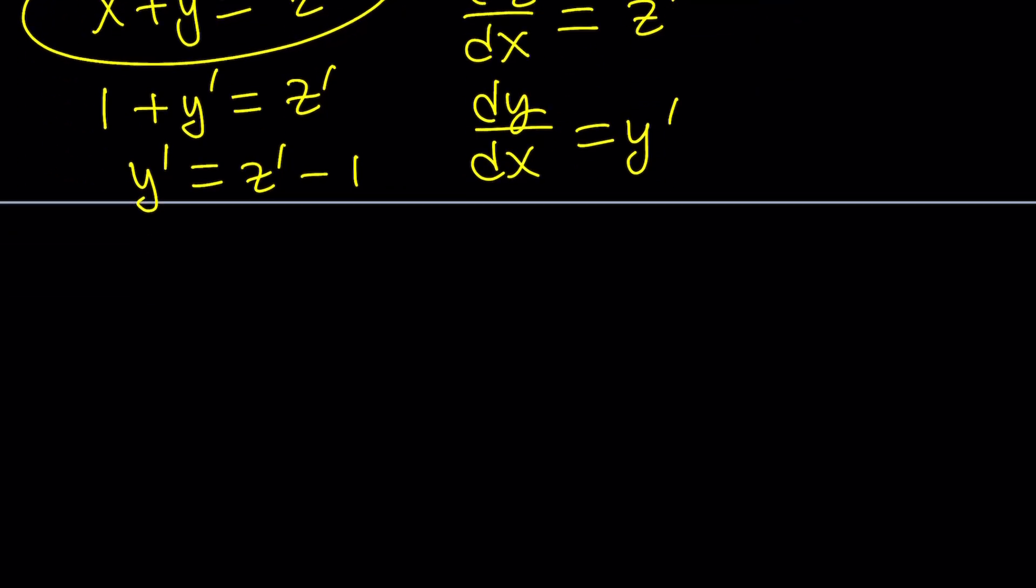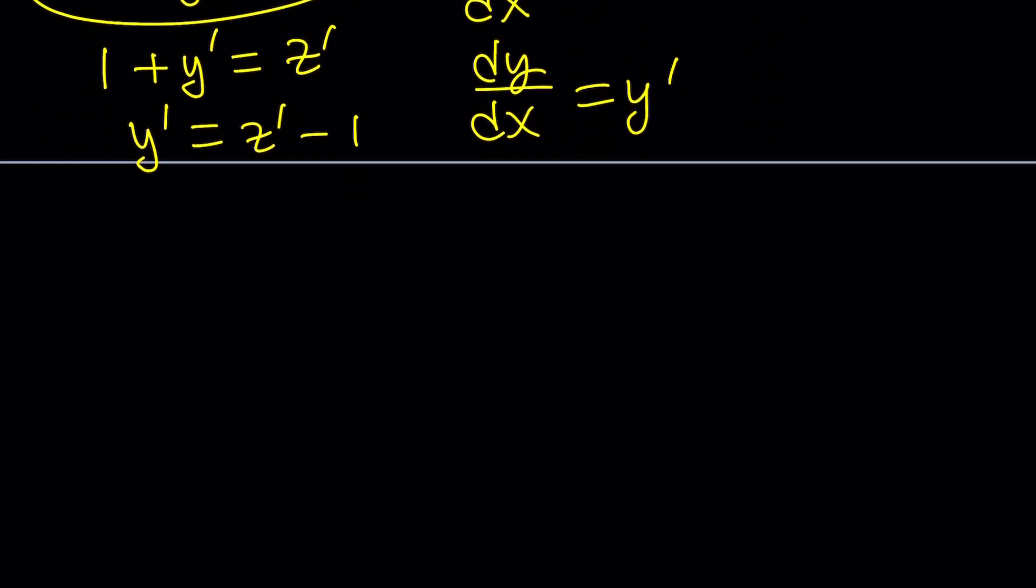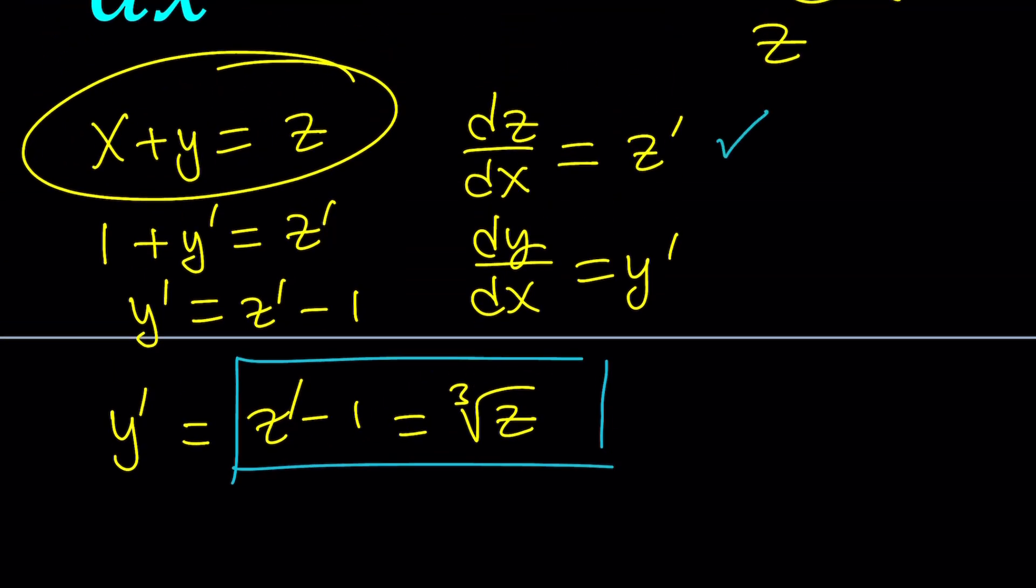And now, let's go ahead and replace y' with pretty much everything. But what do we have on the right-hand side? We have the cube root of z. Great. So we get y' equals z' minus 1, and that is equal to cube root of z. Now, let's take this equation and replace z' with dz/dx, and then solve it.